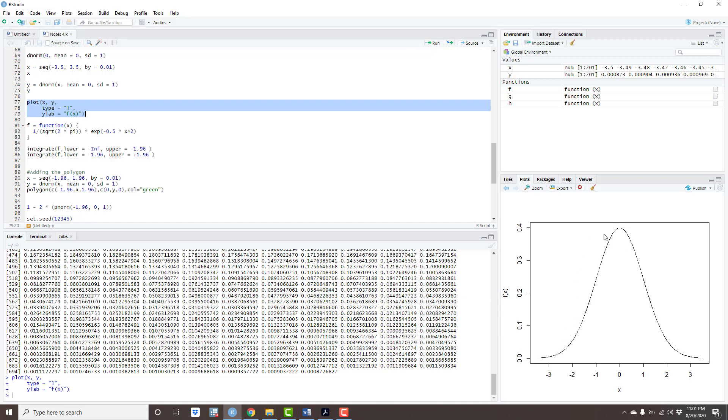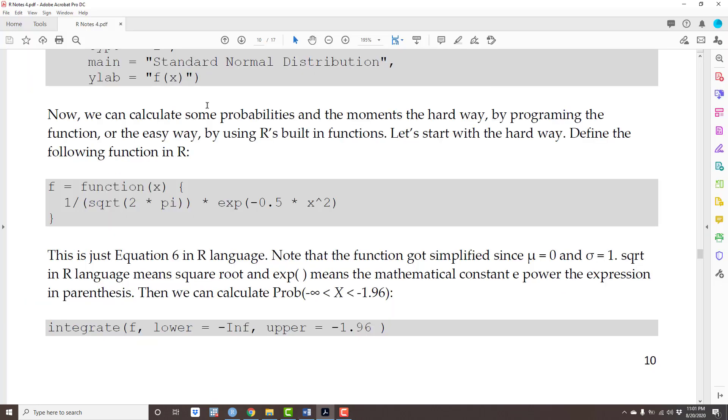But now let's program in the function again and then calculate some probabilities. This time I'm gonna do it the hard way again by programming the function itself. Notice that this is a simplified version of what I had before because the mean is 0 and σ is 1, so the function gets easier but it's the same thing that we had before.